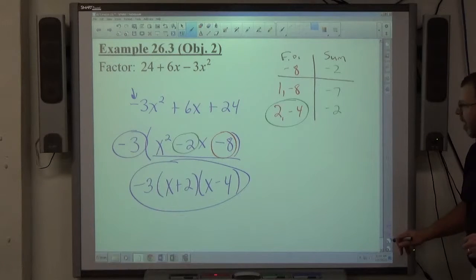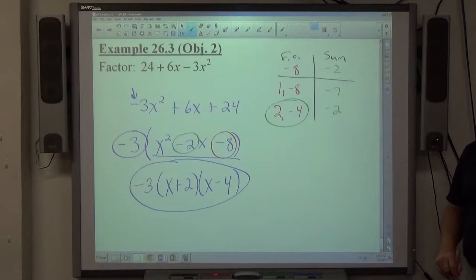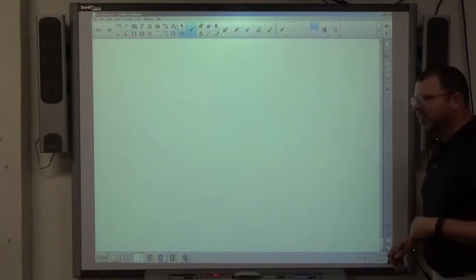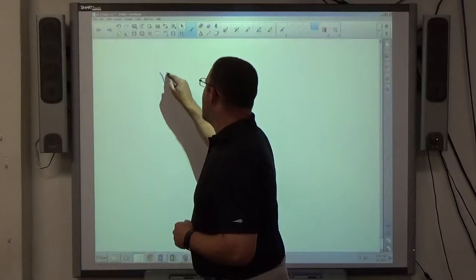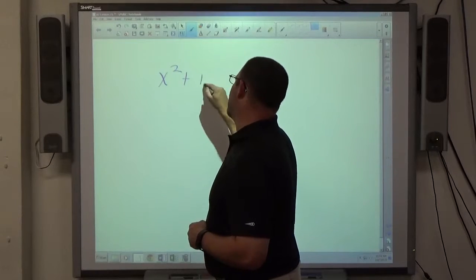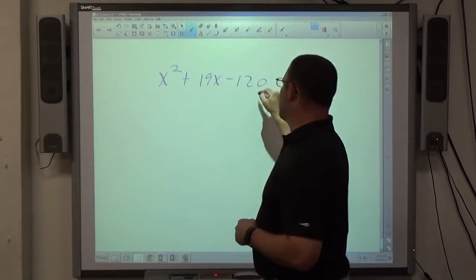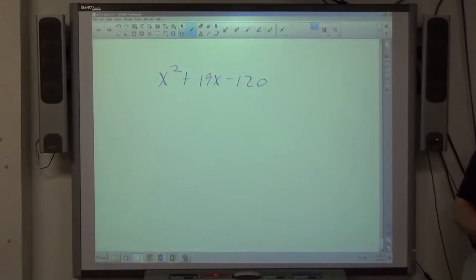Real quick, just before I go to this next problem, because all these problems have been really simple. We've gotten like two ways to do everything. Let me just give you an uglier one, just for fun: x² + 19x - 120. Let's go with that one. 120, that's ridiculous.